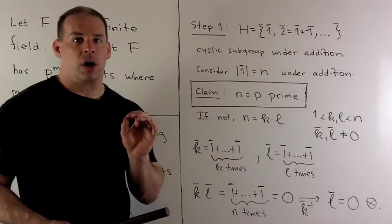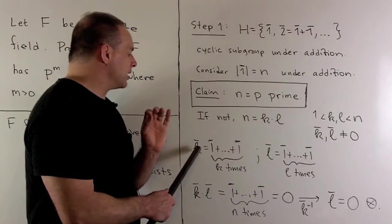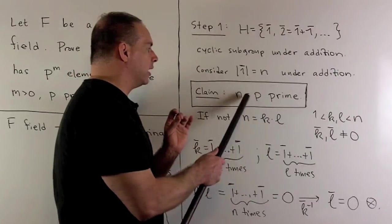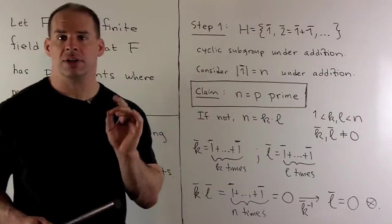Neither of these can be equal to zero, otherwise they would have to be bigger than our n, since n is the smallest that gets us to zero.